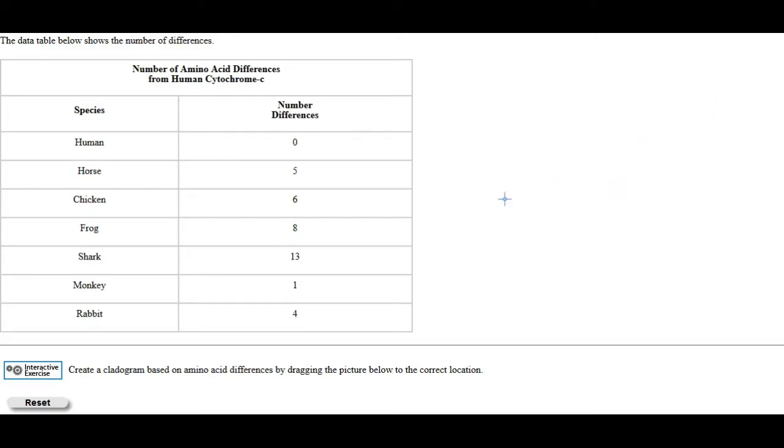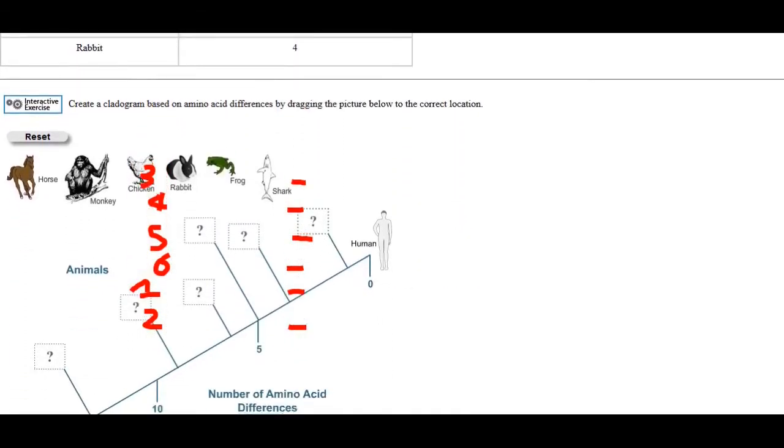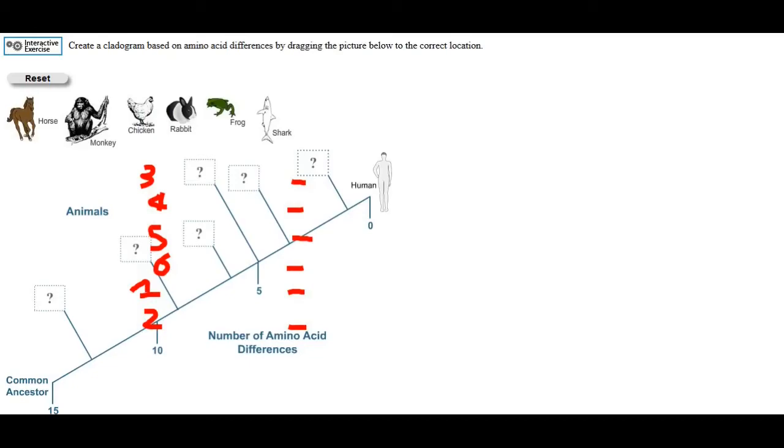Maybe we could number them. In this set, the smallest number is one, so the monkey will be the most closely related species to the human. Then we have the rabbit with four, then the horse with five, then the chicken with six, then the frog with eight, and then the shark with thirteen. The nice thing about this site is that you can directly check if you've got it right. So let's see if we can redo this phylogenetic tree.